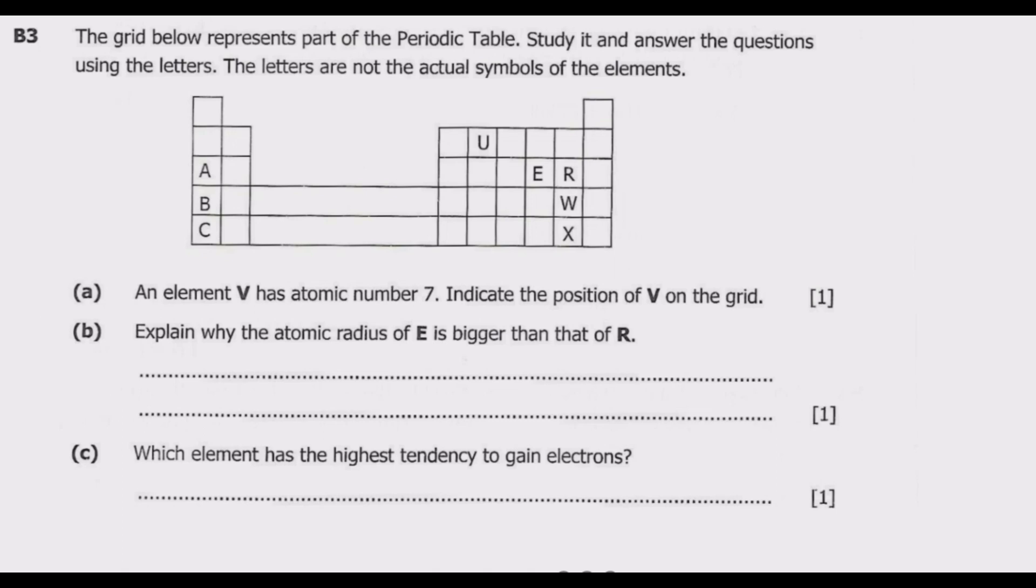So what we are required to do is indicate the position. If you look at the atomic number of V, it is 7. So if you do electronic configuration of V which has 7 electrons, it will be 2 in the first shell, then 7 minus 2 is 5. So this V should be in group 5 because it has 5 electrons in its outermost shell. So we have group 1, then group 2, then group 3, group 4, group 5, 6, 7, then 8. So this is where V should be in group 5.